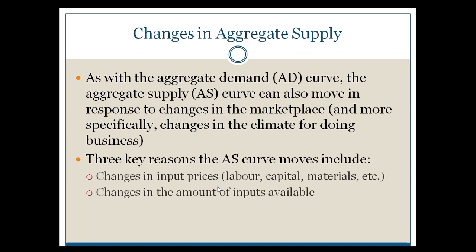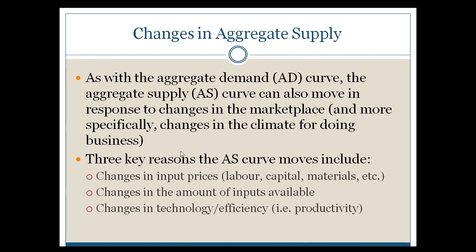The other two factors have to do with the amount of inputs. If you increase the amount of labor, capital, or materials, that tends to create more supply and more capacity. Finally, we'll look at the impact of technology and efficiency — that's kind of a magic bullet policy if government can find ways of growing it. The more technology and efficiency you have, the better your productivity, and the more your aggregate supply curve will push outwards, giving you more options within your economy.